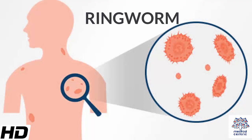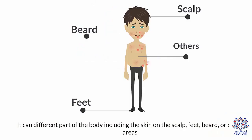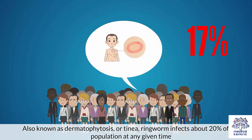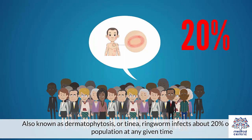Today's topic is ringworm. Ringworm refers to a fungal infection that develops on the top layer of the skin. It can affect different parts of the body, including the skin on the scalp, feet, beard, or other areas. Also known as dermatophytosis or tinea, ringworm infects about 20% of the population at any given time.